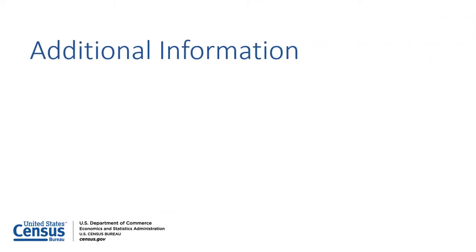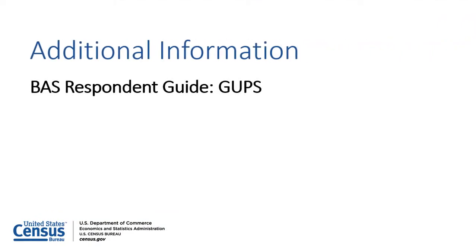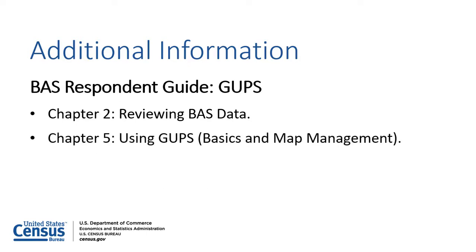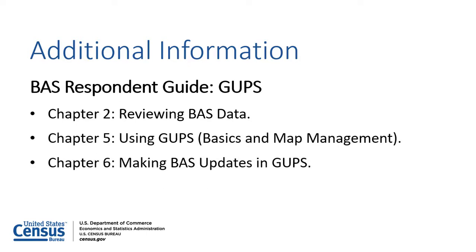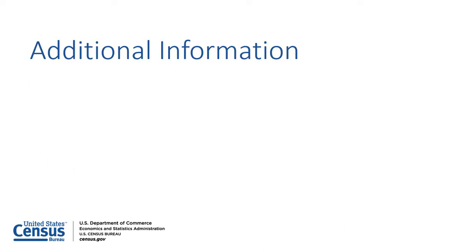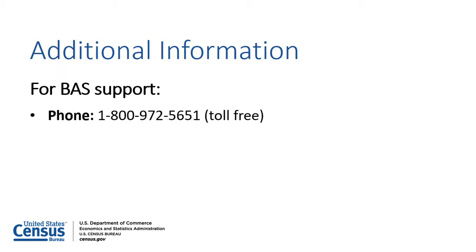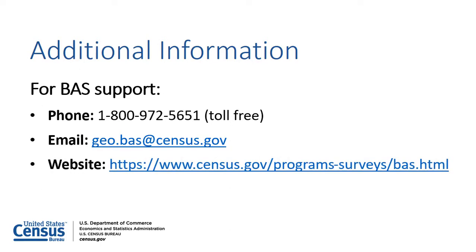For assistance using GUPS to create a BAS submission, refer to the BAS GUPS Respondent Guide. Chapter 2 provides information on reviewing existing BAS data. Chapter 5 provides information on the basic functionality of GUPS. Chapter 6 provides step-by-step instructions for reviewing features and making BAS updates in GUPS. For additional information and BAS support, please contact the Census Bureau by phone toll-free at 1-800-972-5651 or by email at geo.bas@census.gov. Participants may also refer to the BAS website for resources.